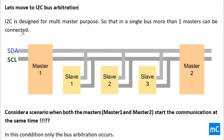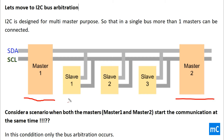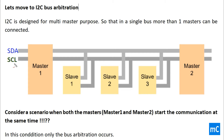Let's move to the I2C bus arbitration. I2C is designed for multi-master purpose, so that in a single bus more than one master can be connected, as shown in this figure. Here we can see Master 1 and Master 2 connected with Slave 1, Slave 2, and Slave 3 on a single SDA and SCL. Consider a scenario when both masters start communication at the same time — in this condition only, the bus arbitration occurs.